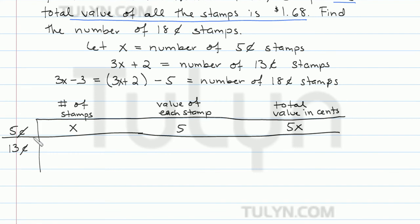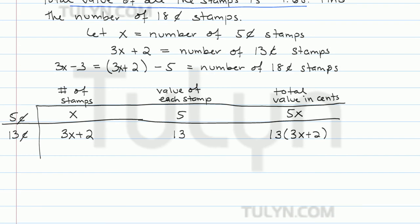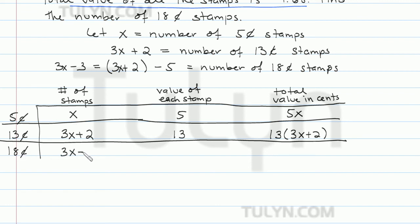Similarly, for the 13 cent stamps, there are 3x plus 2 stamps and they're worth 13 cents each, so the total value is 13 times (3x plus 2). And finally, for the 18 cent stamp, the number of stamps is 3x minus 3. They're worth 18 cents each, so the total value is 18 times (3x minus 3).